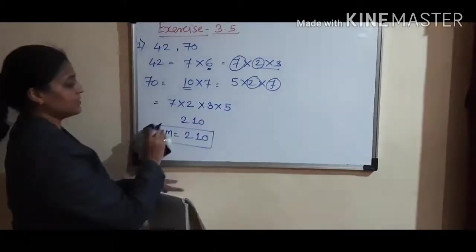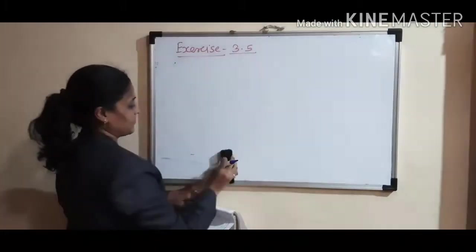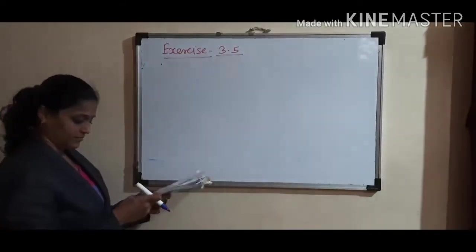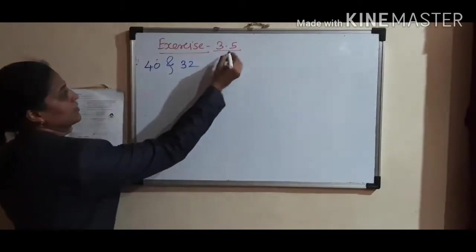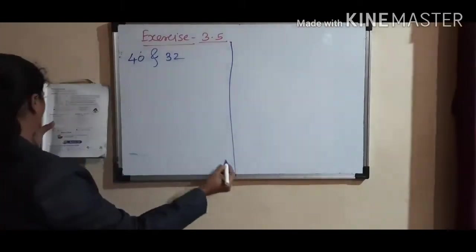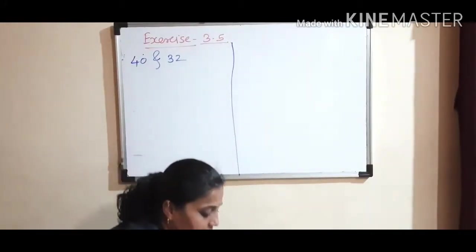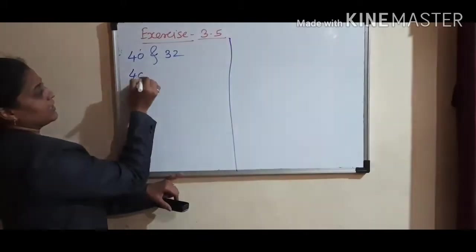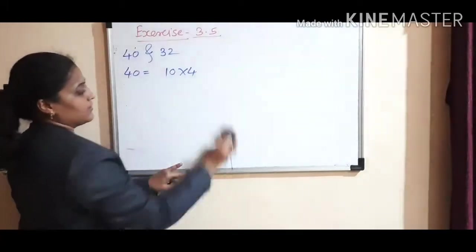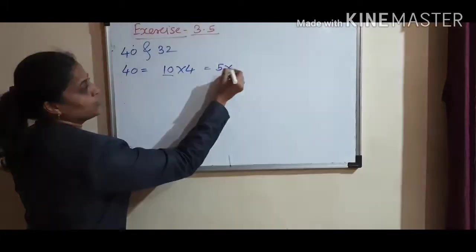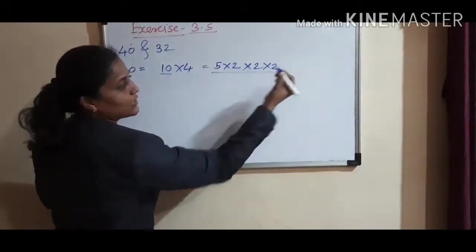Let's take some more examples: 40 and 32. We will take three-digit examples as well. 40 equals 10 times 4. This 10 is 5 times 2, and 4 equals 2 times 2. All the prime numbers we got.